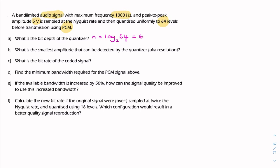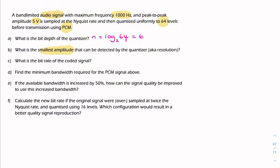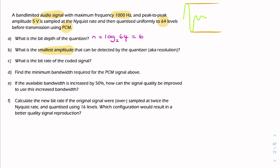Second question, what's the smallest amplitude? So what they're asking for is the step size of the quantizer. If you imagine your signal to be something like this, with a peak-to-peak value or peak-to-peak voltage of 5 volts, and we then divide that up into 64 levels.